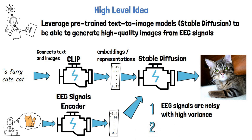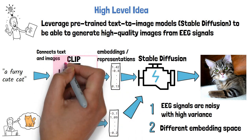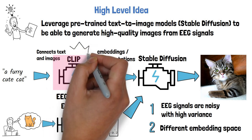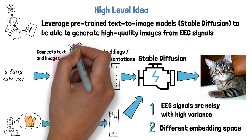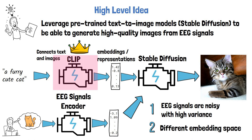Second is that embeddings from the new encoder are not related to CLIP's text and image embeddings — they are coming from a different embedding space. CLIP was trained on a huge dataset of image and text pairs to create similar embeddings for text and images with similar semantics, bringing images and text to the same embedding space. This capability is important for Stable Diffusion to work properly, and we'll now see how they overcame these challenges.